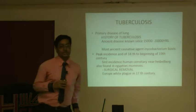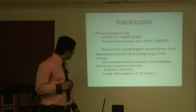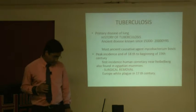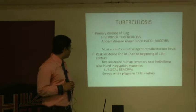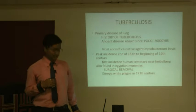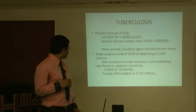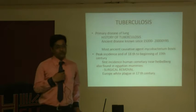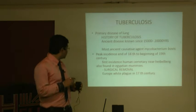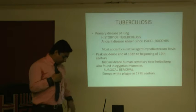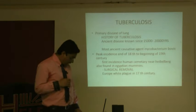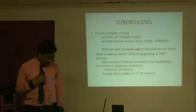The peak incidence of the disease was found at the end of the 18th century and probably the beginning of the 19th century. The first human incidence was found in a cemetery near Heidelberg. Cases were also reported from Egyptian mummies dating 3,000 to 2,400 years before Christ. There is also mention of this disease in various literatures such as the Ebers Papyrus in Egypt.